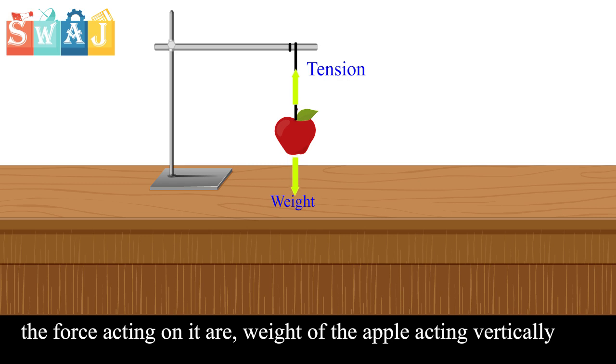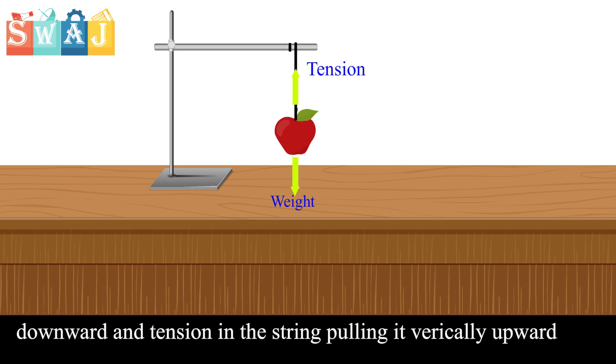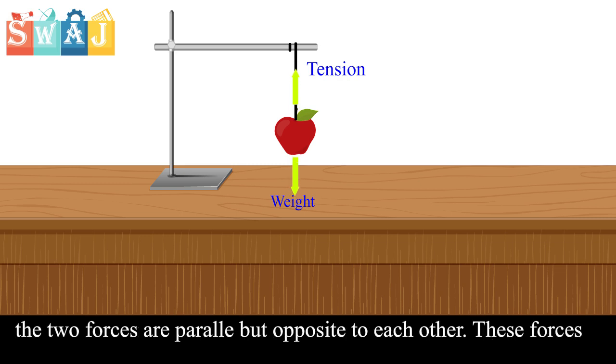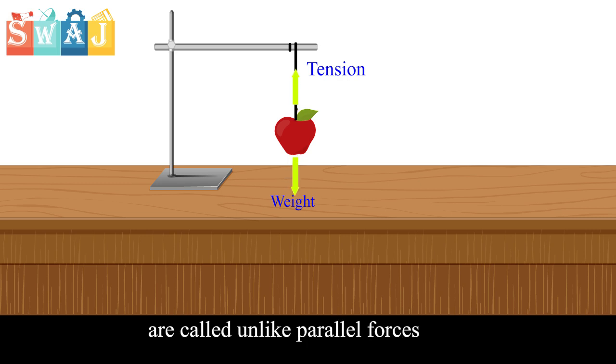The forces acting on it are the weight of the apple acting downward and the tension in the string pulling it vertically upward. The two forces are parallel but opposite to each other. These forces are called unlike parallel forces.